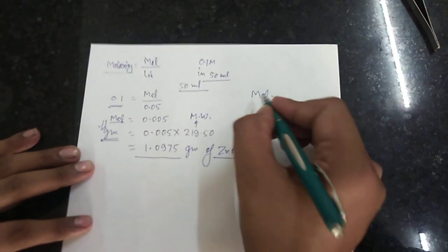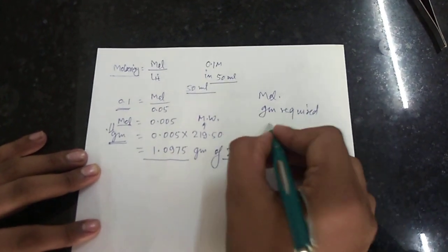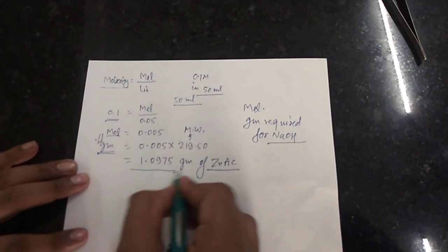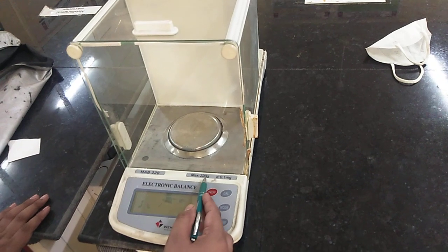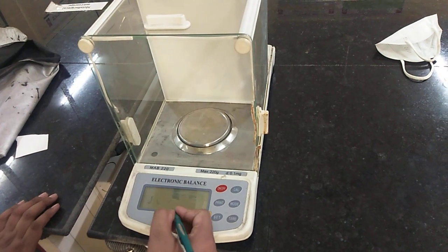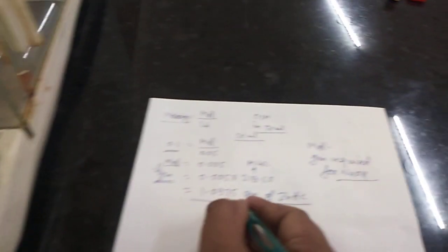Similarly, we calculate the number of moles and grams required for the sodium hydroxide (NaOH) solution, converting it the same way. For weighing, I am using this weighing machine, which is very accurate — it can measure a maximum of 220 grams and a minimum of 0.1 milligrams, giving readings up to four decimal places. Our calculation of 1.0975 grams matches this precision.